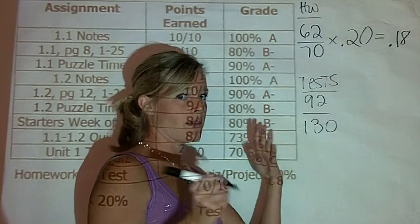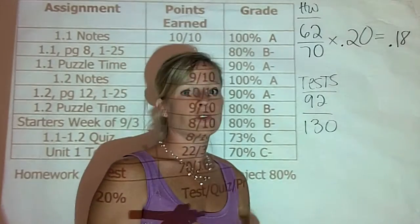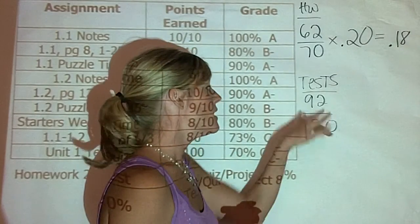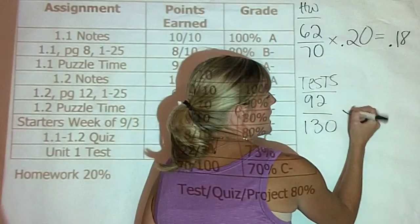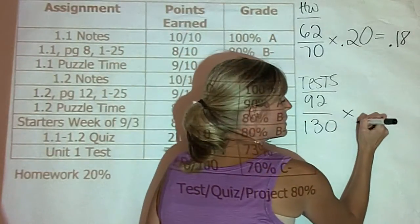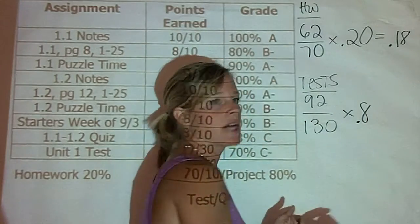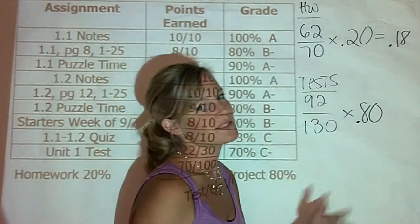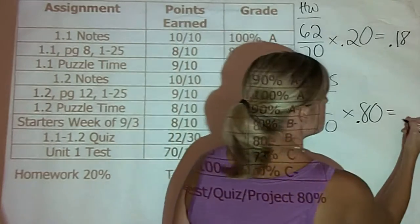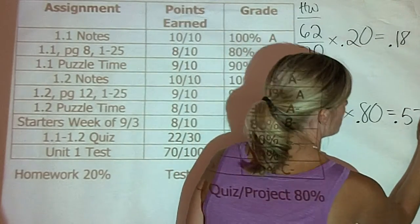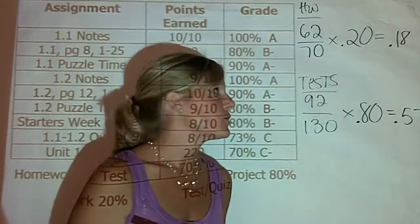For the tests, in order to figure out their test average and how much of their grade they've earned towards tests, you would take 92 divided by 130, and because this is 80% of their grade, you're going to multiply by 80% as a decimal, .8 or .80. Again, the same thing. When you do that, you end up getting about .57.